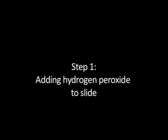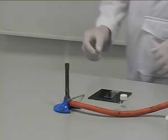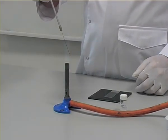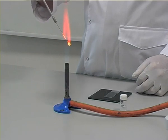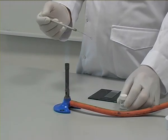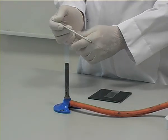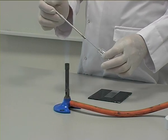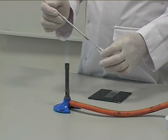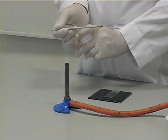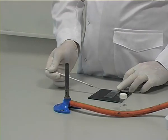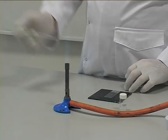Step 1: Adding hydrogen peroxide to the slide. Firstly, an inoculating loop is sterilised in the Bunsen flame. It is then used to pick up a drop of hydrogen peroxide. The hydrogen peroxide is placed onto a clean glass slide and the loop is sterilised again.